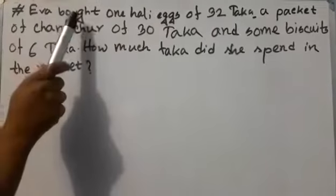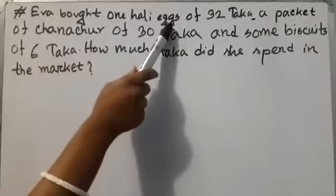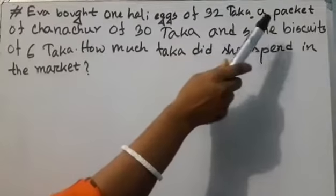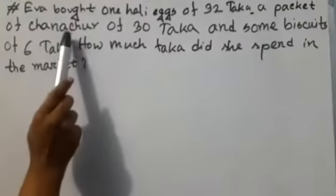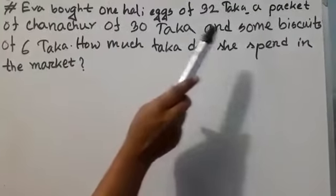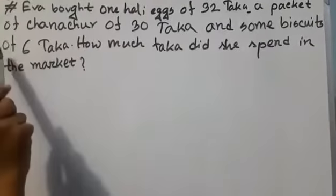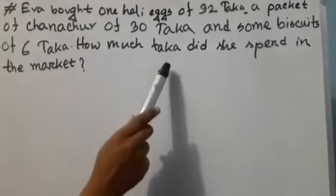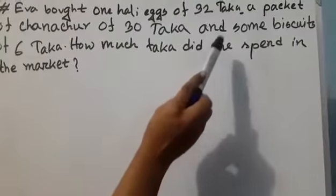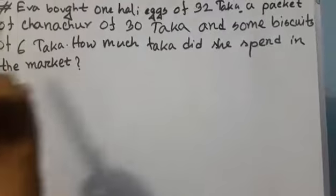So everyone, we have introduced some Notes and Coins. Now we discuss some word problems about Notes and Coins. Iva bought one hali eggs of 32 taka, a packet of chanachur of 3 taka, and some biscuits of 6 taka. How much taka did she spend in the market?